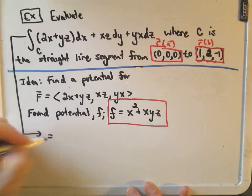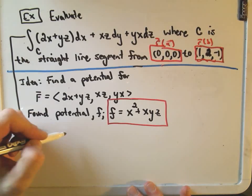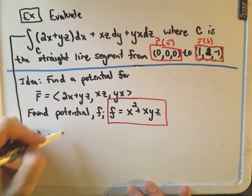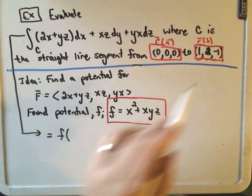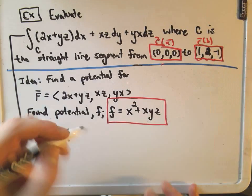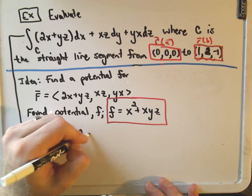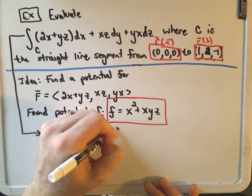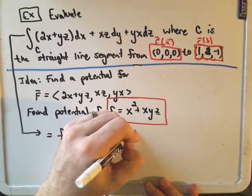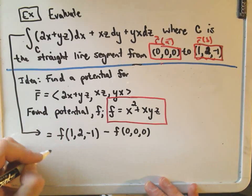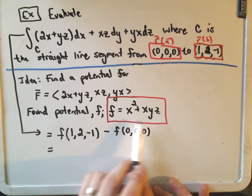But it says to evaluate this line integral, all we do is take our potential function, we plug in the point that we stop at, which is 1, 2, negative 1, and we subtract away the point that we started at, which was the origin: 0, 0, 0. And all we do is plug it in.